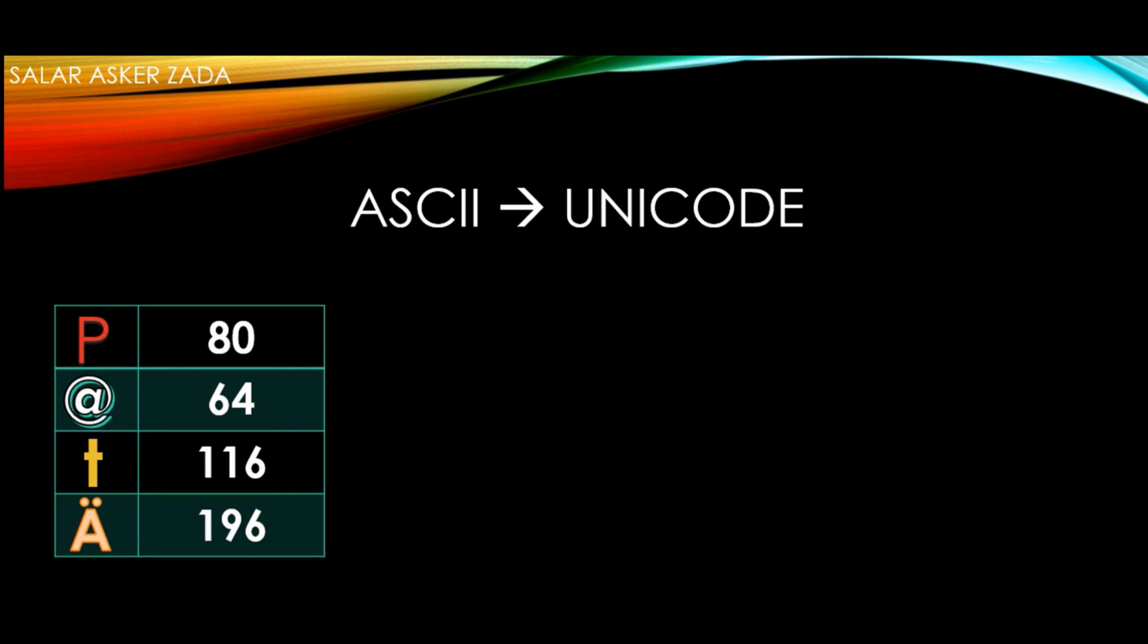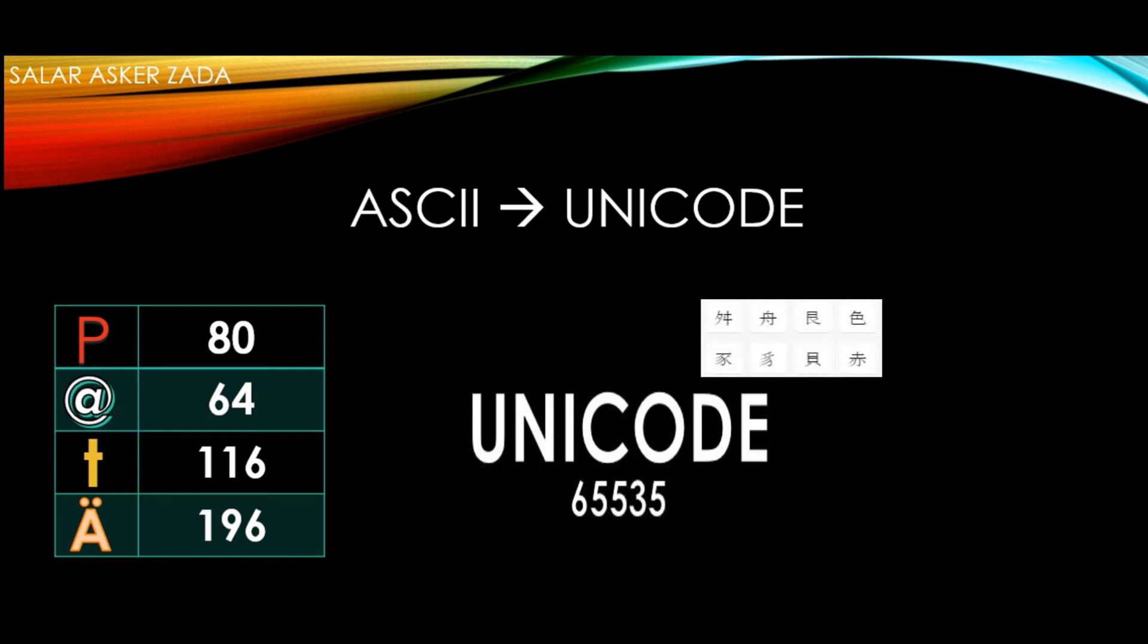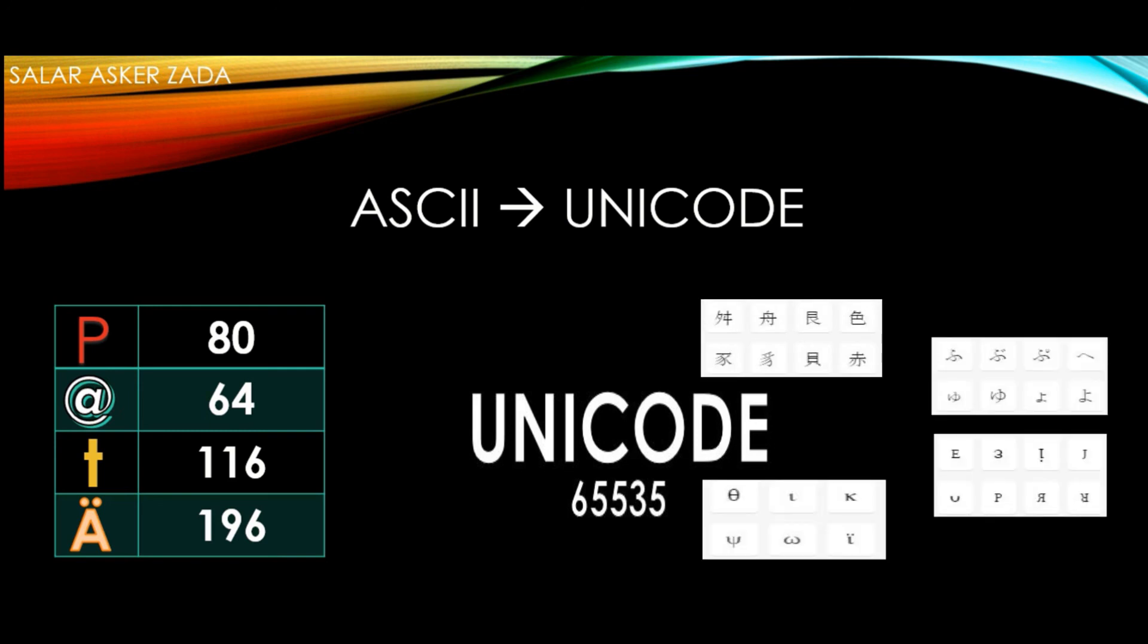In order to represent characters and special characters included in every human language that exists in the world, computer scientists created an enhanced version of ASCII. This version is called Unicode, and Unicode can support 65,535 characters. Now in Unicode, characters from all the other languages got representation. You can look for yourself the characters in the Unicode table. Just google it. In Unicode, the first 128 characters are the same as ASCII. That makes Unicode compatible to use instead of the ASCII system.